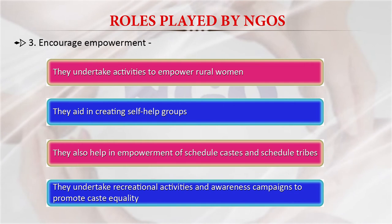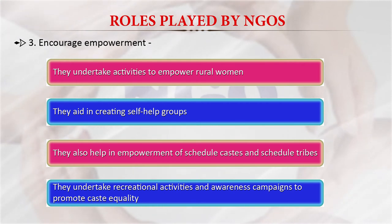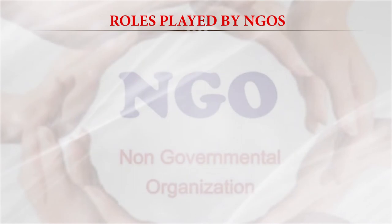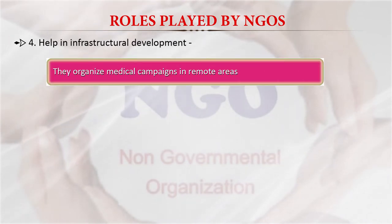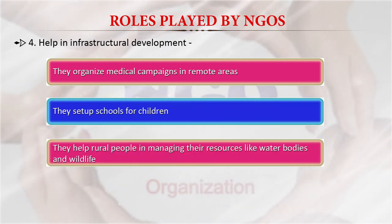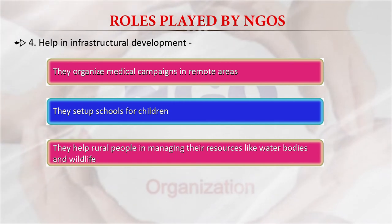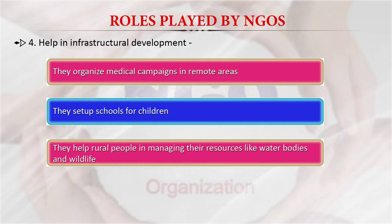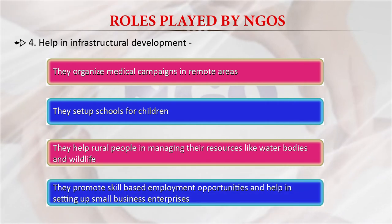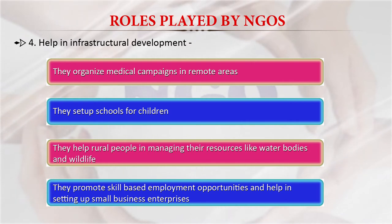NGOs undertake recreational activities and awareness campaigns to promote equality. They help in infrastructural development, organize medical campaigns in remote areas, set up schools, help rural people manage their resources like water bodies and wildlife, and promote skill-based employment opportunities. They also help in setting up small enterprises to provide employment to the rural masses.